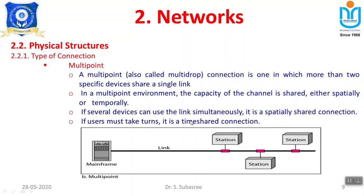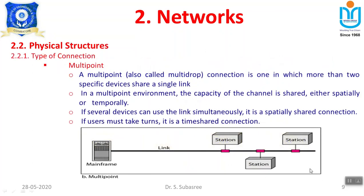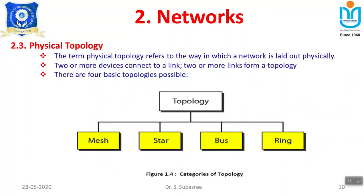These are the two ways to establish connections — point-to-point or multipoint. Next is physical topology, which refers to the way systems in a network are arranged so that communication can be established without disturbance. There are four different types of physical topology: mesh topology, star topology, bus topology, and ring topology.